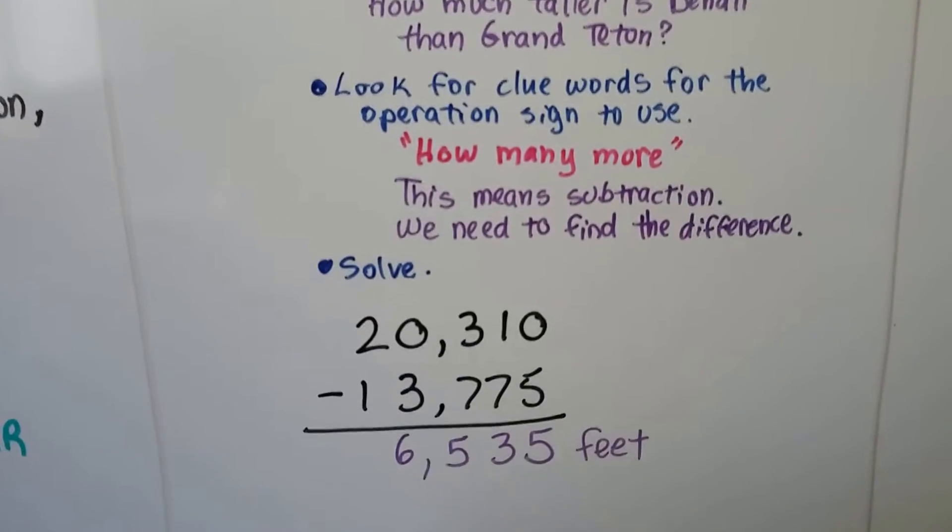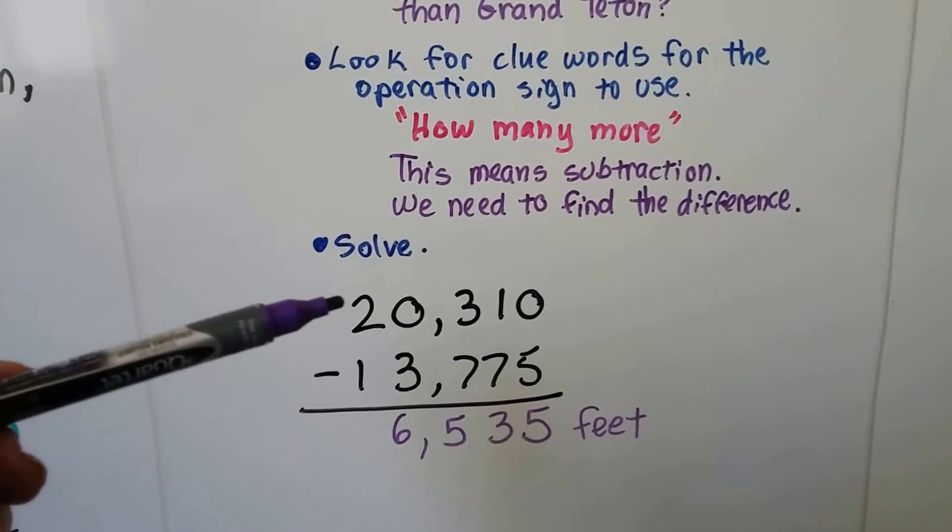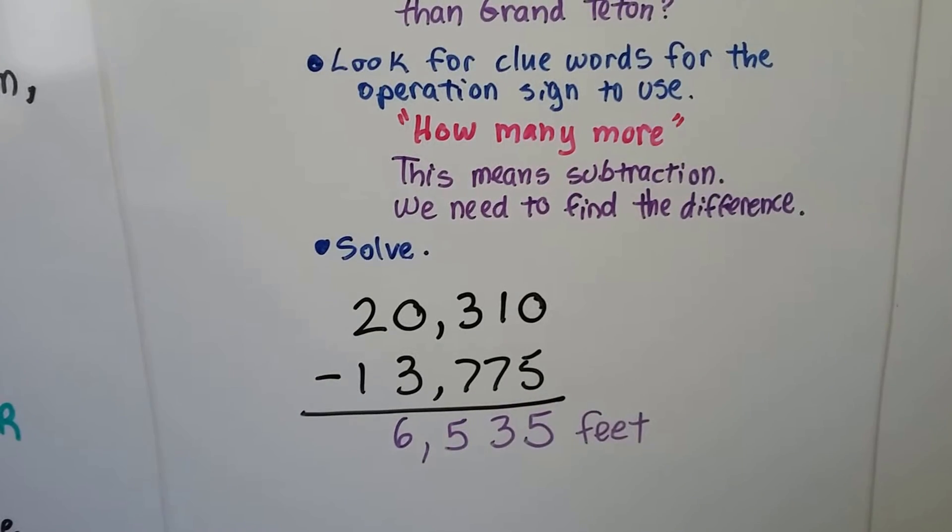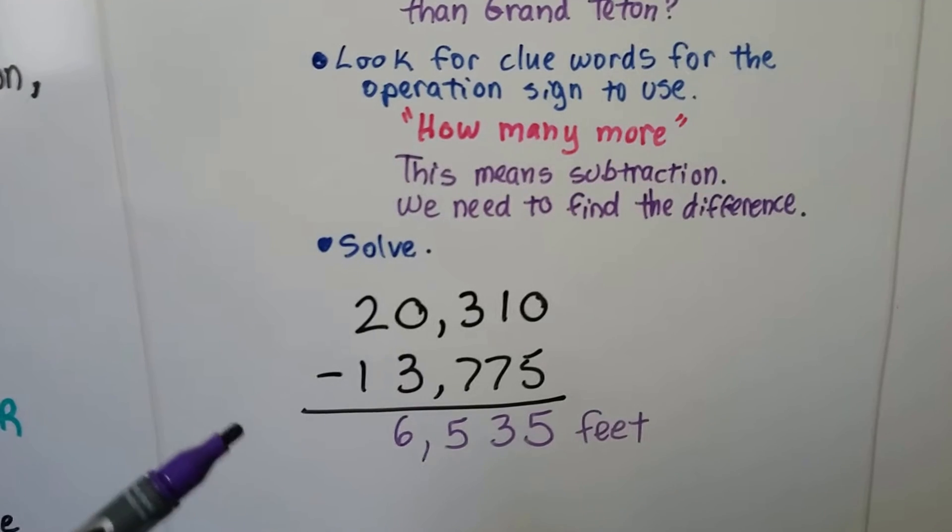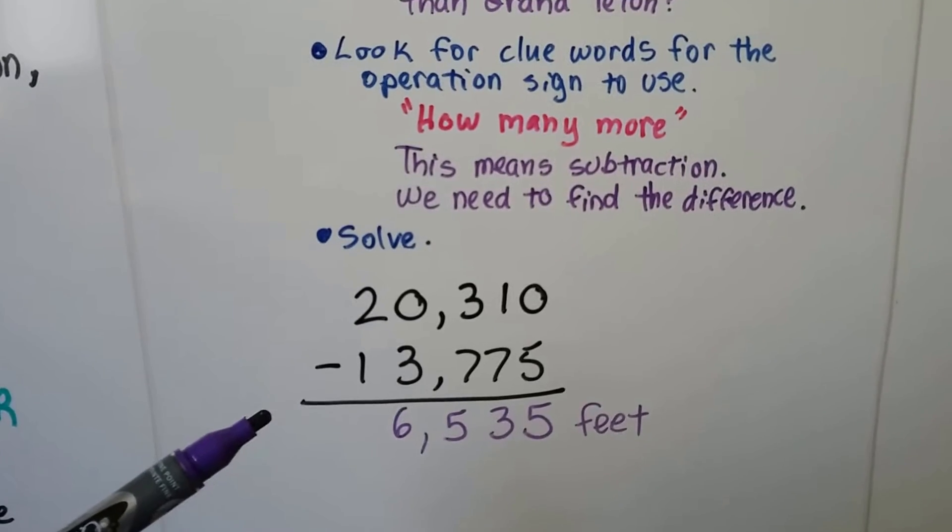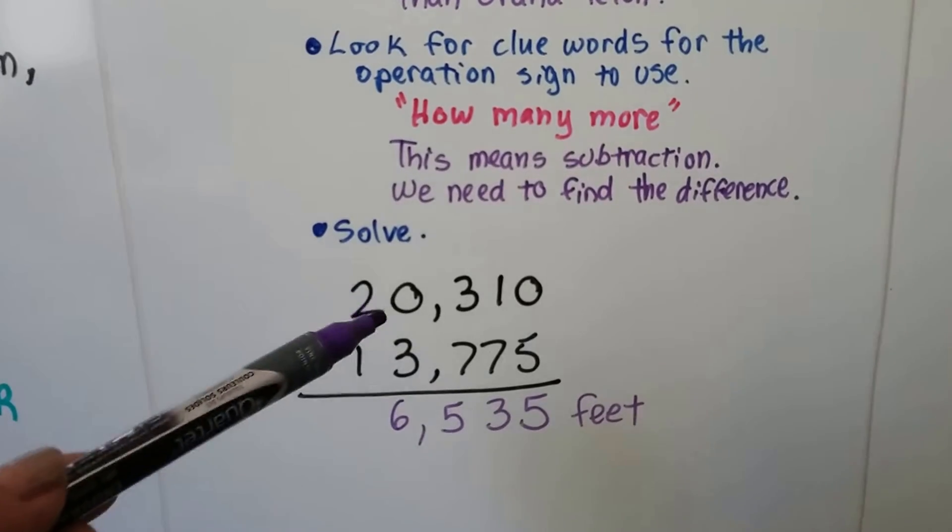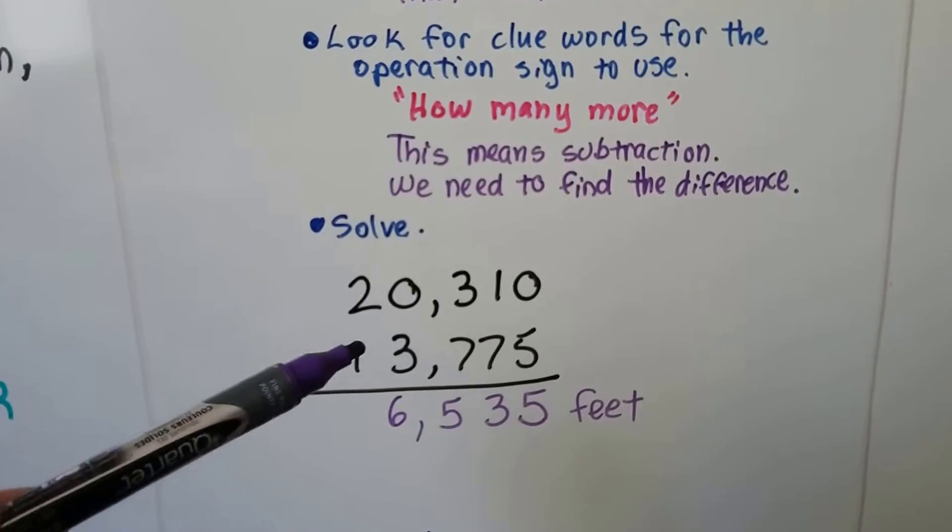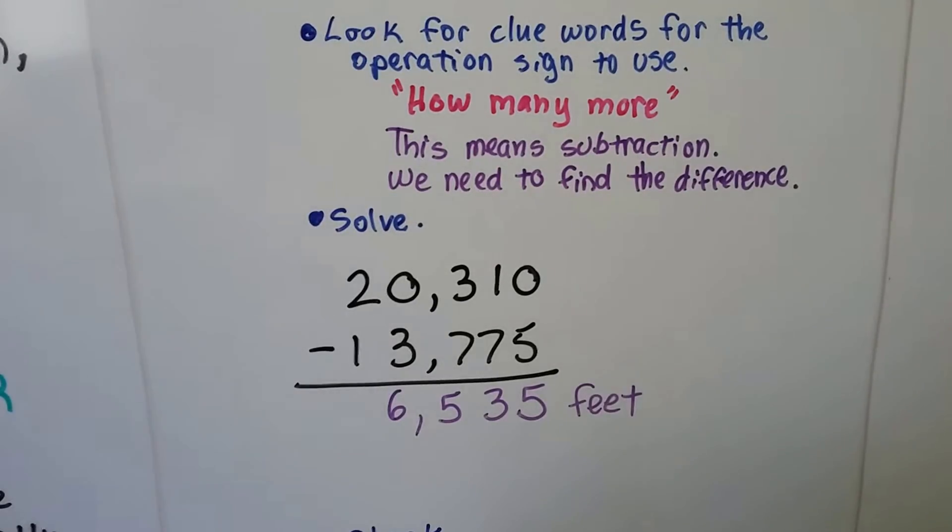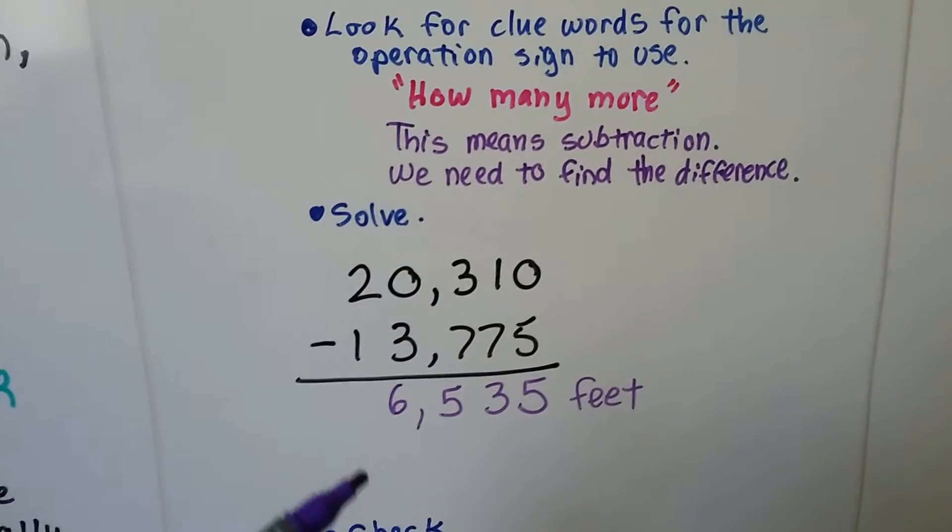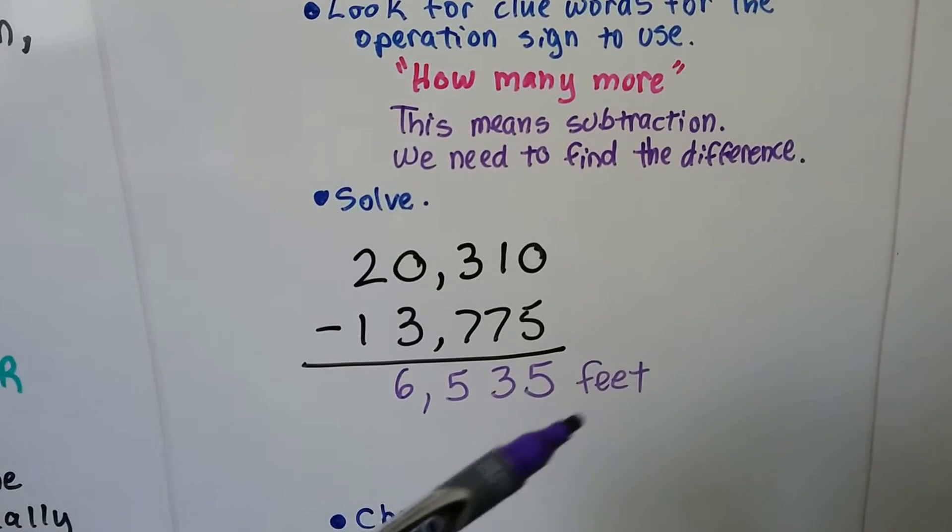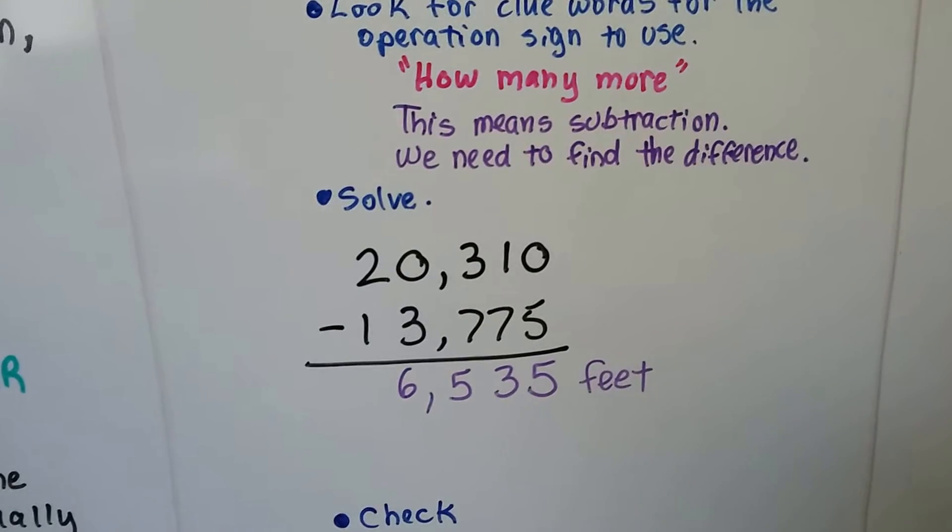So we do subtraction. We do 20,310 minus 13,775. Now chances are you're going to be using a calculator for this because in the first half of the math GED test, they give you a calculator. Just punch in 2-0-3-1-0 minus 1-3-7-7-5 equals. We're going to talk about that in the next lesson. We're going to talk about calculators. We see that it's 6,535 feet and we would label our word problem answer.